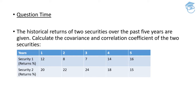Here is the table. The returns in percentage form are available for five years, one to five. For security one the returns are: 12, 8, 7, 14, and 16. For security two, the returns in percentage form are: 20%, 22%, 24%, 18%, and finally 15%, for years one through five.